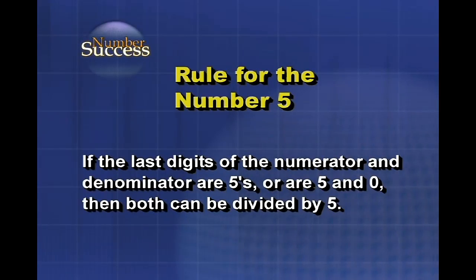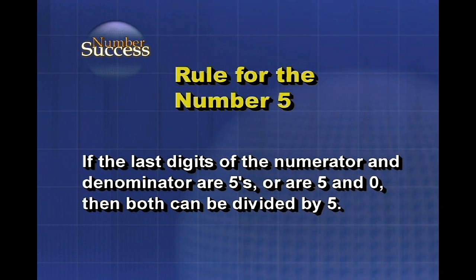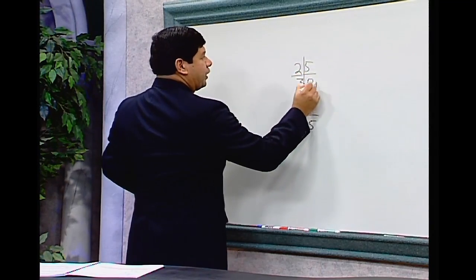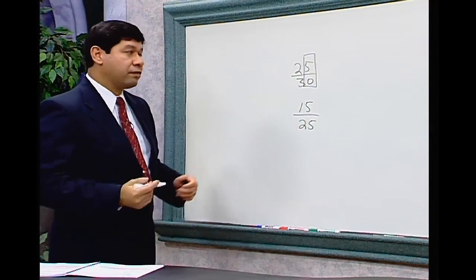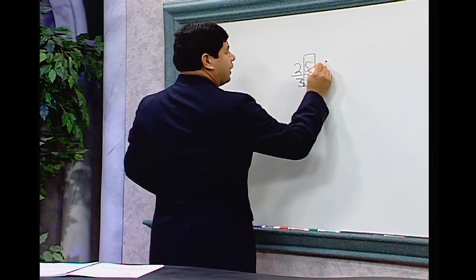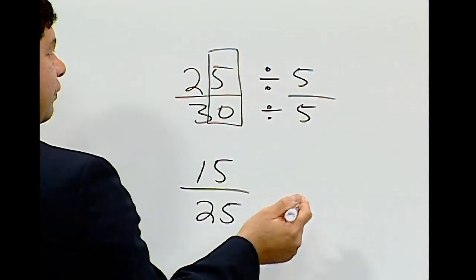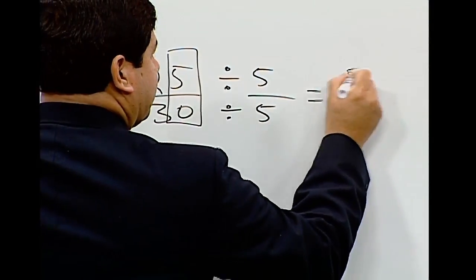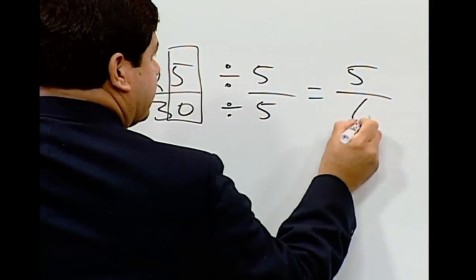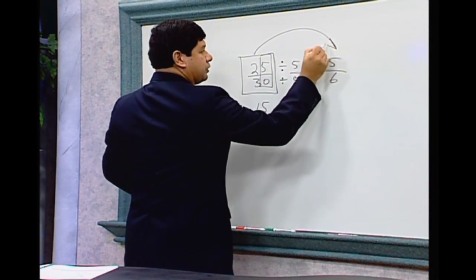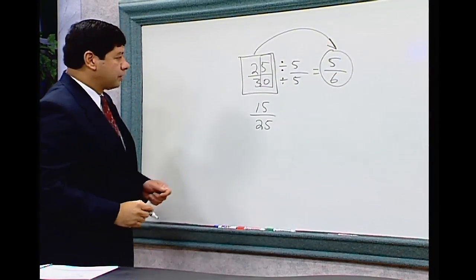Rule for the number 5: if the last digits of the numerator and denominator are 5, or are 5 and 0, then both can be divided by 5. Example: 25 over 30. The last digits are 5 and 0, so we can divide by 5. 25 divided by 5 is 5, and 30 divided by 5 is 6. So 25 over 30 reduces to 5 sixths.